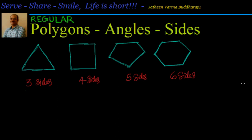Hello friends, welcome back — hearty welcome to you. In this session we will briefly touch upon regular polygons: how to find the sum of interior angles when we know the number of sides, and how to find the number of sides when we know the exterior angle. We will look at different regular polygons and establish relationships between the number of sides, the interior angle, and the exterior angle. To do that, I have drawn polygons here.